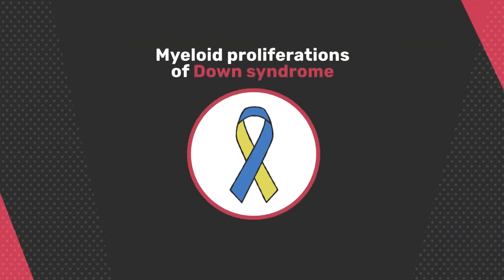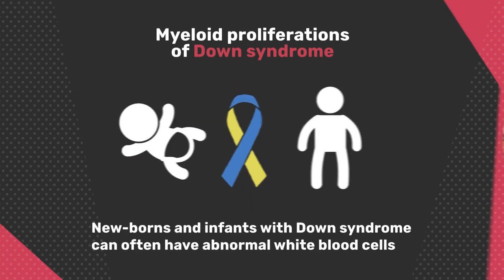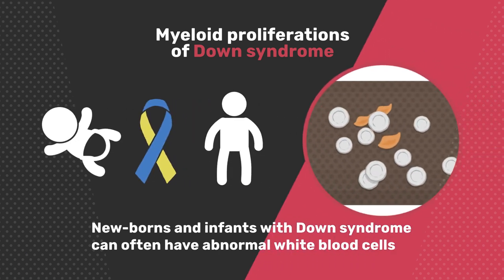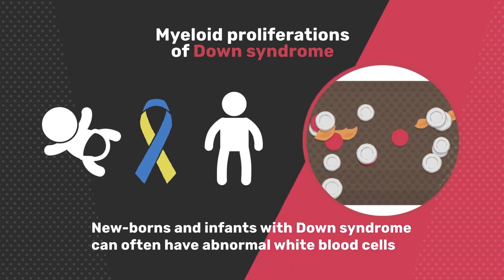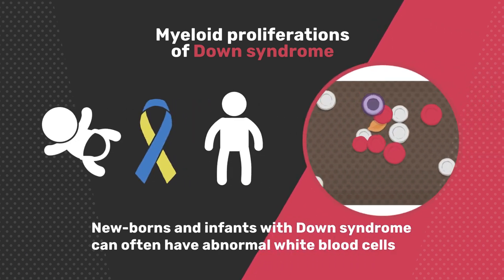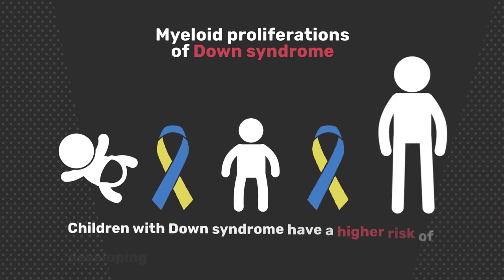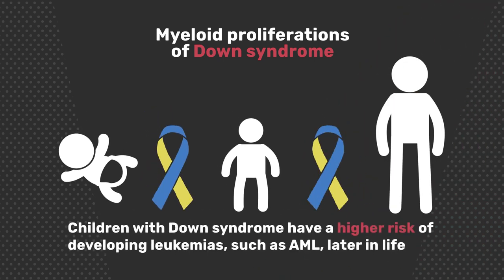Myeloid proliferations of Down syndrome. Newborns and infants with Down syndrome can often have abnormal white blood cells. However, these cells rarely cause symptoms and disappear in most cases after some time. Nevertheless, children with Down syndrome have a higher risk of developing leukemias, such as AML, later in life.